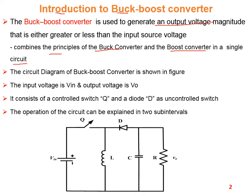The circuit diagram for the buck-boost converter is shown in this figure. The input voltage is represented by V_input and the output voltage is represented by V0. It consists of a control switch Q and a freewheeling diode. The energy storing elements are the inductor and capacitor. The operation of this circuit can be explained in two modes or two sub-intervals.